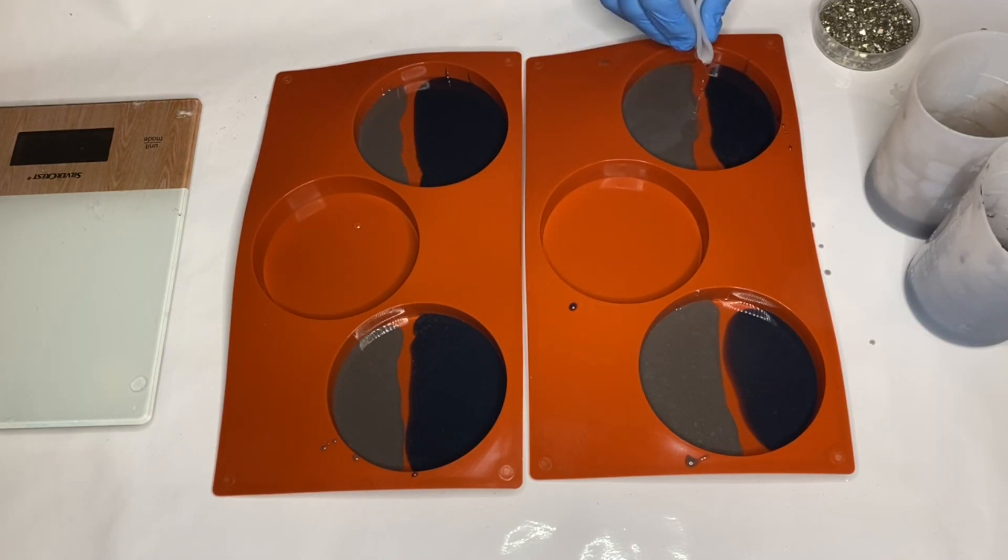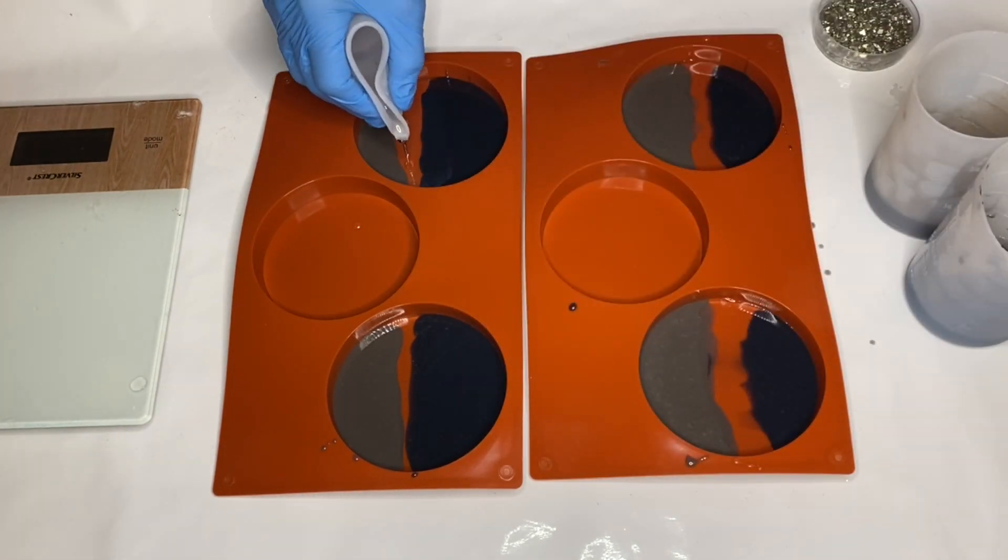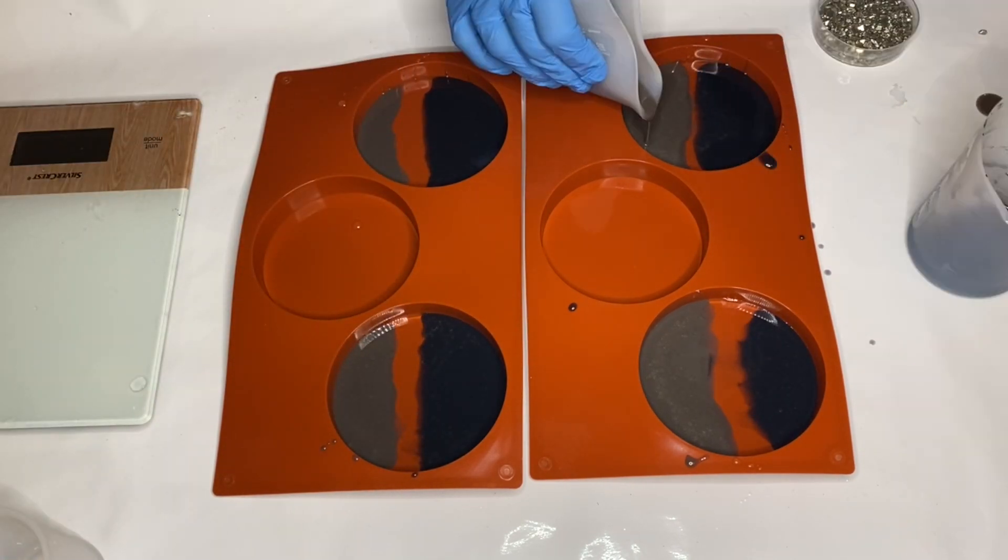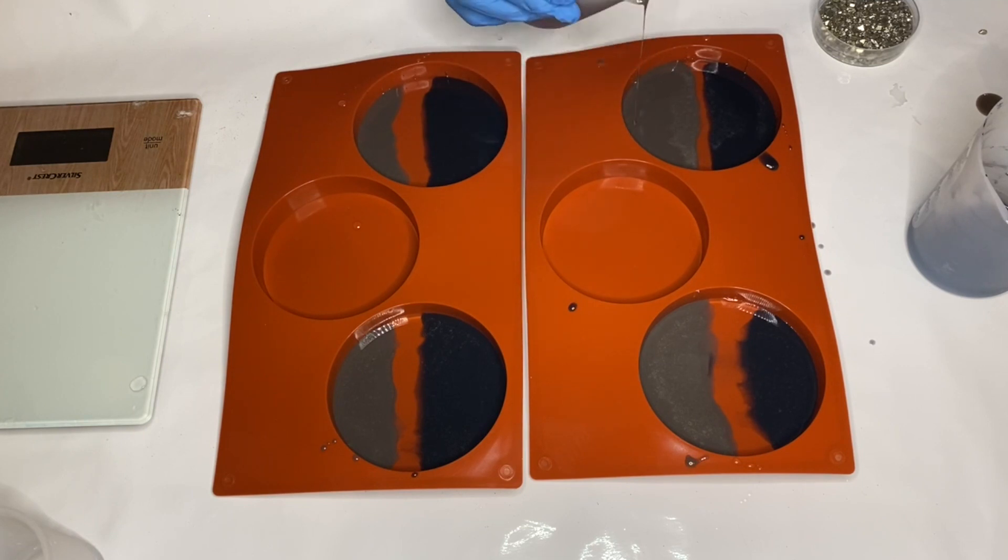And then she adds more clear down the middle, which pushes the two colors out, and then goes in again adding to each side the charcoal and taupe pigmented resin.